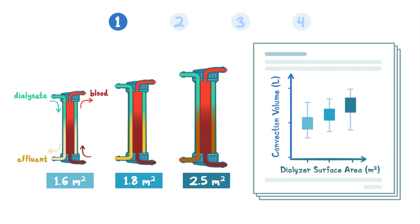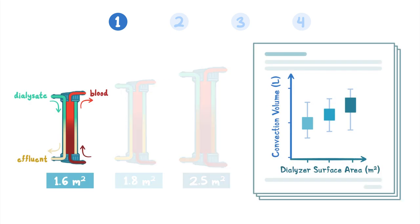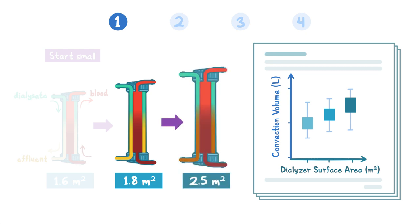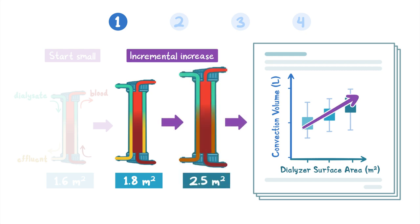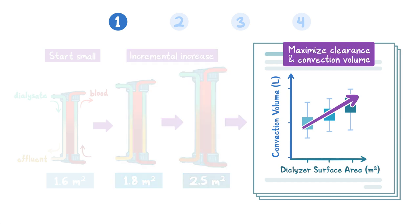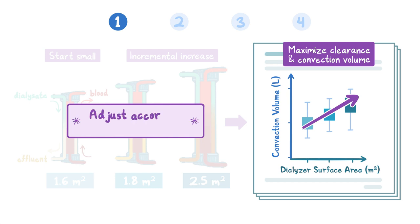Starting with a smaller dialyzer, such as one with a 1.6 square meter surface area, is recommended. If the patient has no intradialytic complications with that size, you can increase to a 1.8 square meter dialyzer in the next session. Dialyzer size can be incrementally increased in the absence of adverse symptoms to maximize clearance and convection volume. Importantly, the dialyzer size may need to be adjusted according to body size.